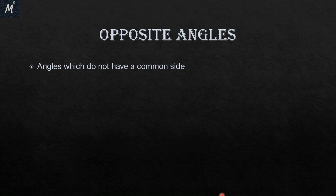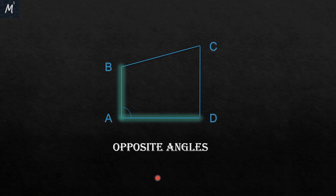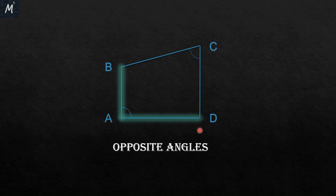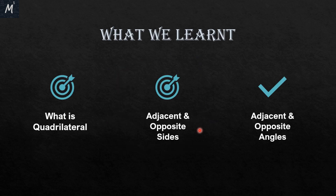The next one is opposite angles — angles which do not have a common side, or in simple words, angles which are not adjacent. Since the adjacent angles of A are B and D, the remaining angle C is opposite to angle A. And if the question asks which angle is opposite to angle B, the answer is angle D. So now we have learned what a quadrilateral is, and what adjacent and opposite sides and angles are.